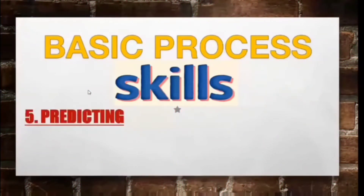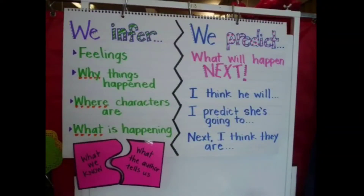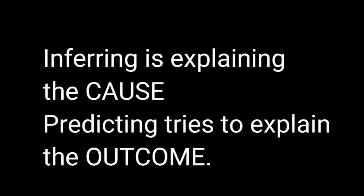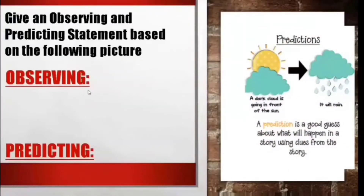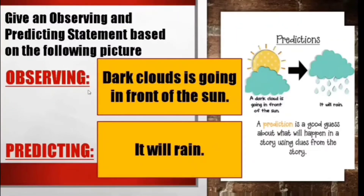Skill number five: predicting. Predicting is the skill of forming an idea of an expected outcome based on observations or experiences. If inferring tries to explain the reason why something is the way it is, predicting on the other hand tries to explain the outcome. In inferring, you give what you think is the cause; in predicting, you give what the outcome or effect will be. For example, we can observe that dark clouds are getting in front of the sun, or that the sky is getting dark. Your prediction would be: it will rain.